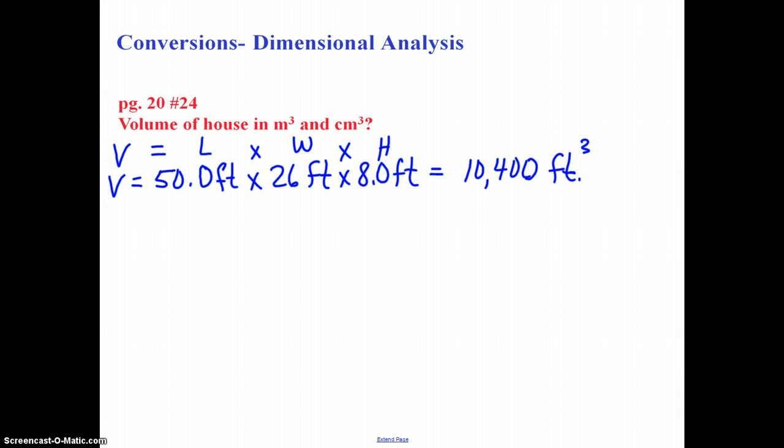Now our job is to take that answer, 10,400 cubic feet, and convert it to meters cubed and centimeters cubed. We are going to use dimensional analysis to do that. Converting from one unit to another, treating them as algebraic quantities. Well, if the foot was an algebraic quantity, where would you put it in this fraction to eliminate feet as unit? You would select putting feet in the denominator so that when you take feet and divide by feet, they cancel out.